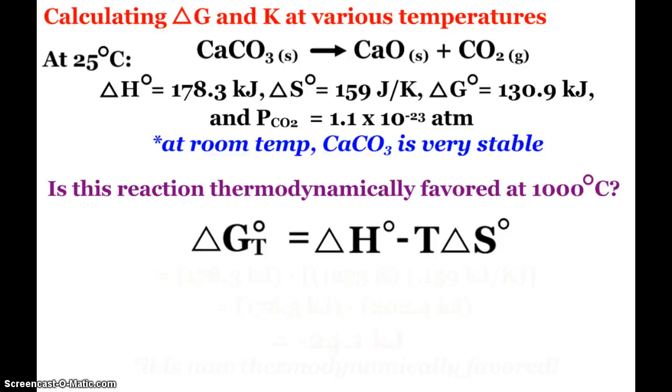All right, so looking at the calculations, here we have the decomposition of calcium carbonate. Well, at 25 degrees Celsius, delta H is 178.3 kilojoules, positive value, endothermic reaction. Delta S is 159 joules per Kelvin, increasing in entropy. We see a solid producing a gas. Delta G is 130.9 kilojoules, not thermodynamically favored as written.